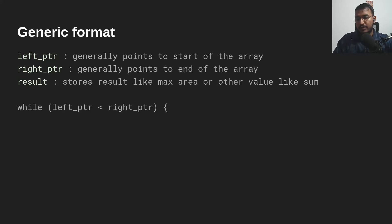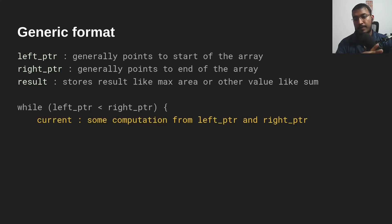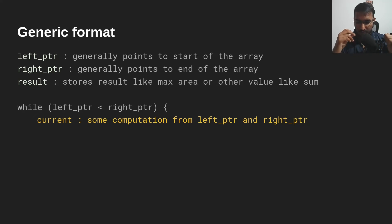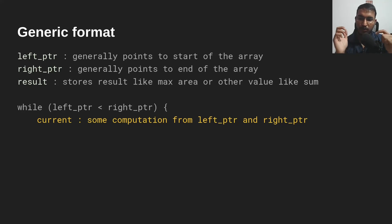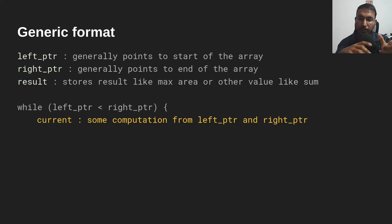This is how we iterate through the array: we use a while loop with the condition that the left pointer is less than the right pointer. While this condition holds, we keep a current value. The way we calculate current is from the left and right pointer indices. Taking the two sum problem as an example — if the left pointer is at zero and the right pointer is at the last element, the current will be the sum of both elements: array[left] + array[right].